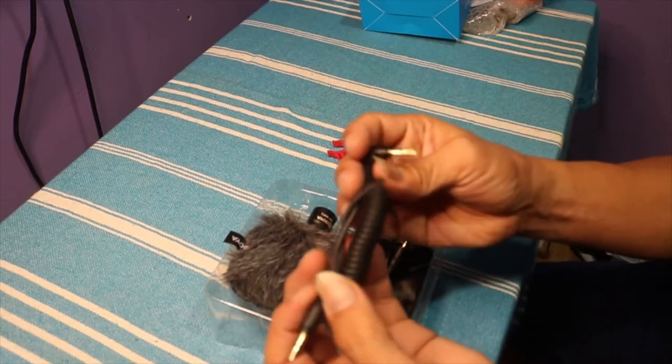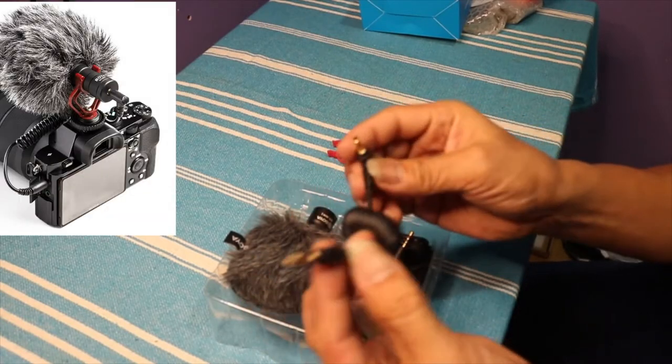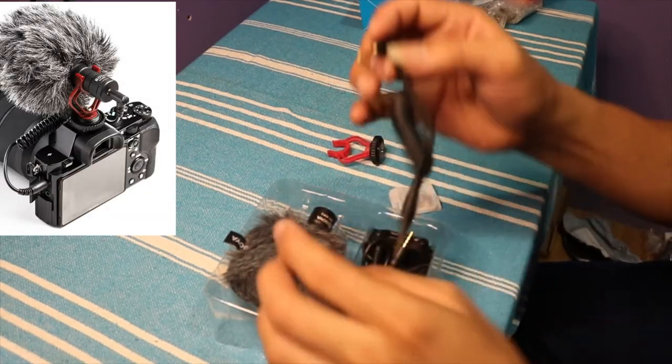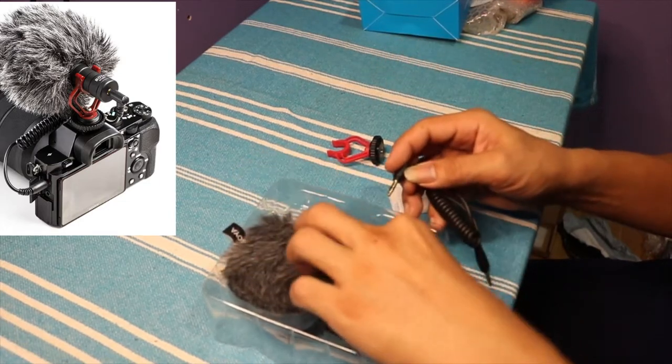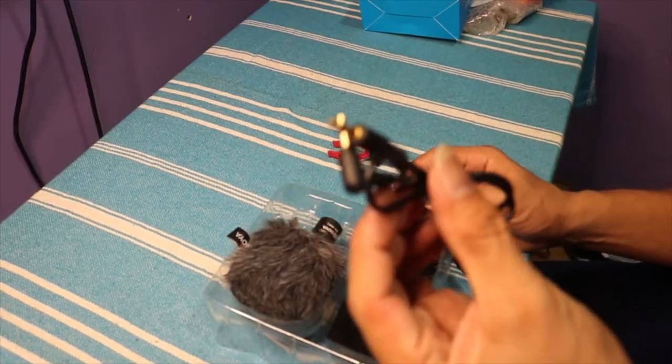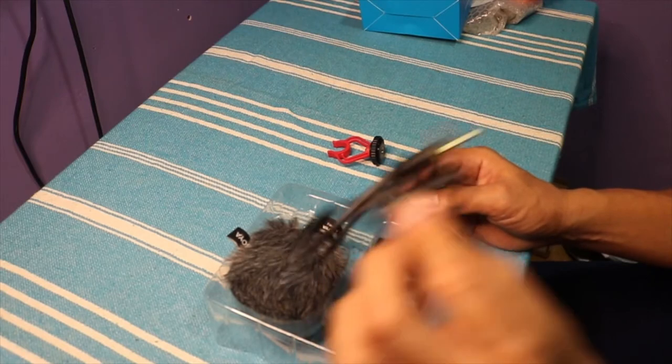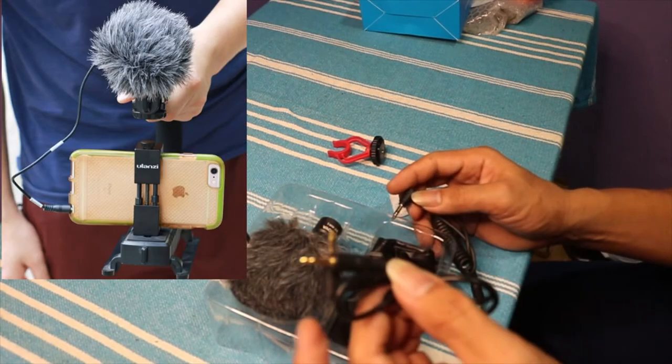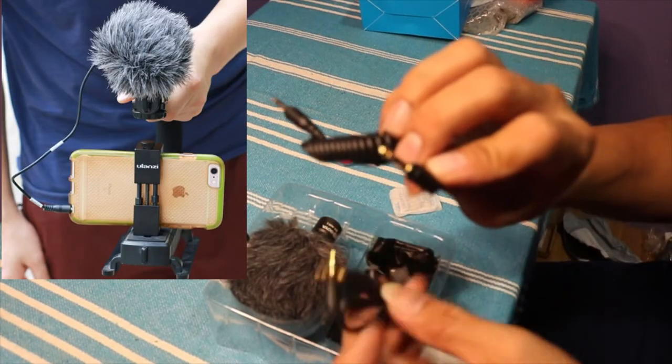So this wire here is for DSLR. This one goes to the microphone. The other connector is the smartphone connector.